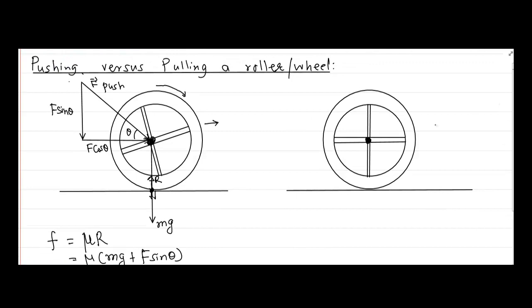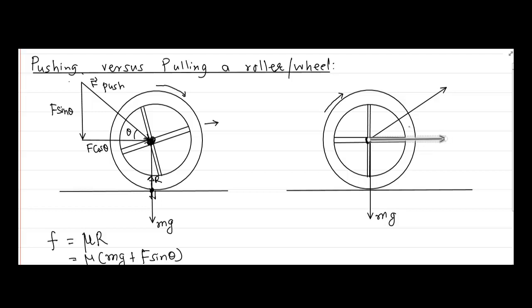Let us do a similar exercise with the pulling force. We have the same wheel with the same mass, so Mg acts in the downward direction. We are pulling this wheel in the same clockwise direction, with the pulling force applied at the axle at the same angle theta. This force can be broken up into a horizontal component F cos theta and a vertical component F sin theta.